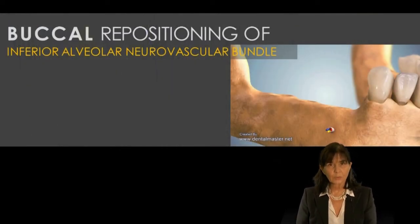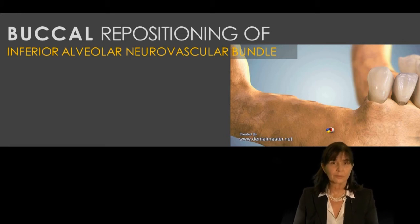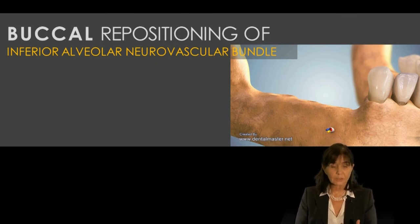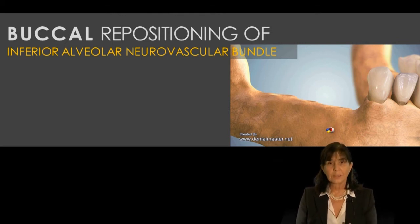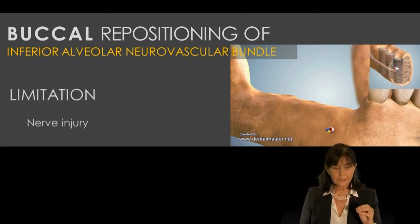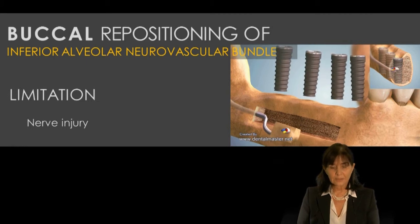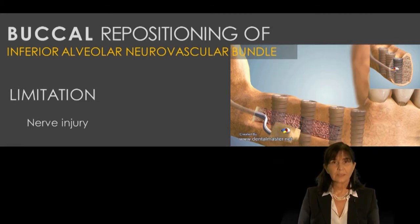The third surgical option for severe posterior mandibular atrophy is buccal repositioning of the inferior alveolar neurovascular bundle. This is a well-known technique, though I hardly use it today due to the significant limitation of nerve injury, since we must actually move the neurovascular bundle laterally.